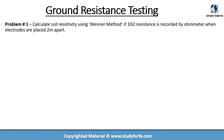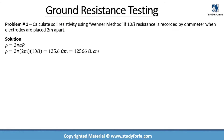Let's go through practice problems on ground resistance testing. Problem one asks us to calculate soil resistivity using the Wenner method if 10 ohm resistance is recorded by the ohm meter and the electrodes are placed 2 meters apart. Using the simplified Wenner equation with R = 10 ohms and A = 2 meters, the soil resistivity calculates to 125.6 ohm-meter, or 12,566 ohm-centimeter.